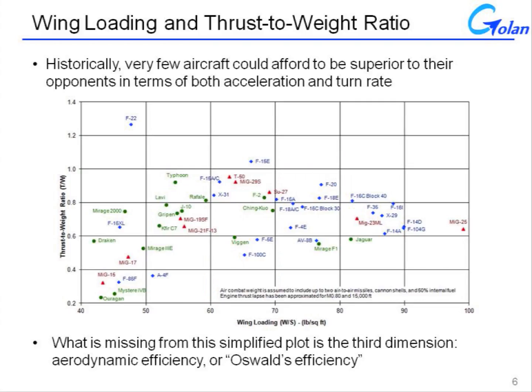If we portray different aircraft for comparison purposes in a manner reminiscent of a constraint diagram, with thrust loading on one axis and wing loading on the other, we can begin to draw some conclusions about trends in both instantaneous turn rate and acceleration.